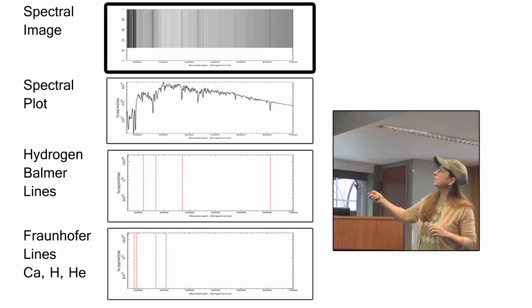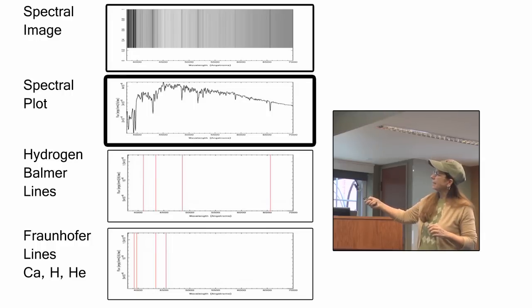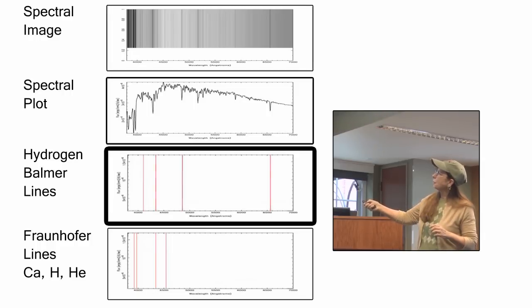Here is a different image with a spectral plot. Here are the Balmer lines - three of the blue lines, and two of them are the same.